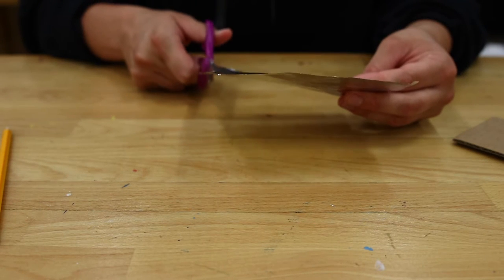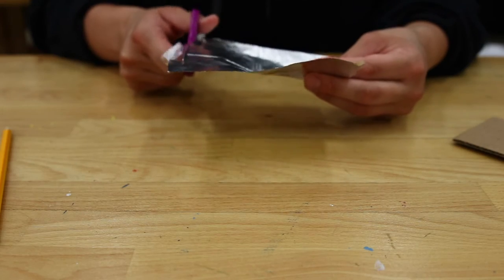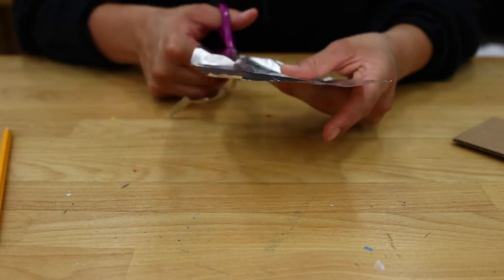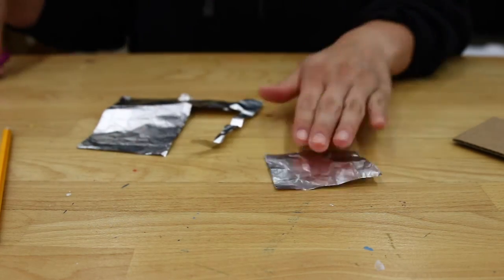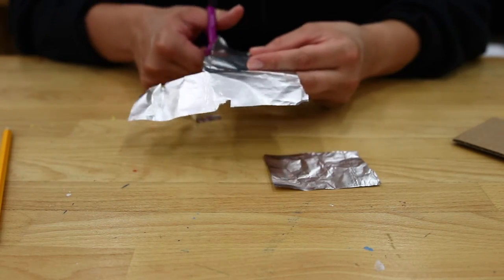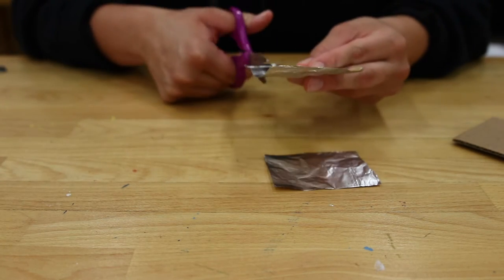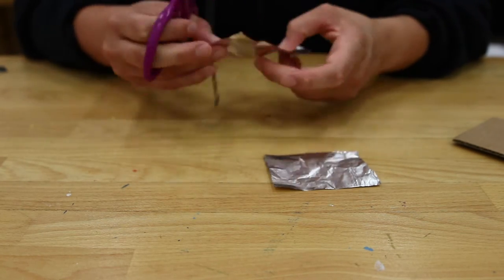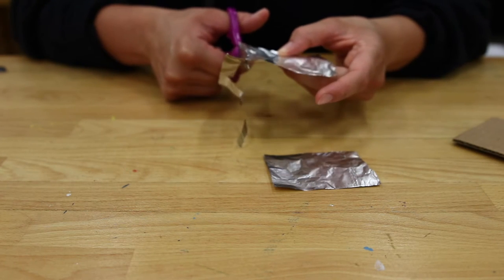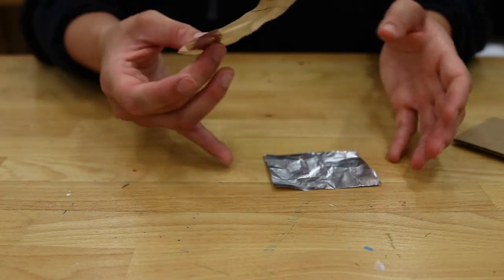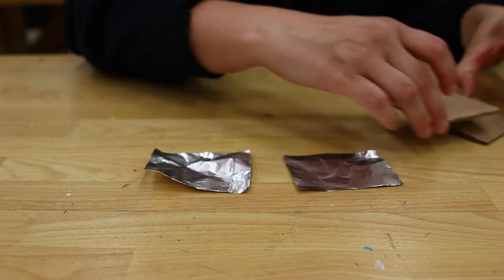Then cut the aluminum foil using your tracing as a guide. I've sped this part of the video up, but take as much time as you need. Now you've got two pieces of foil that match the size of your cardboard.